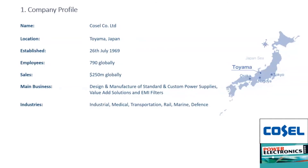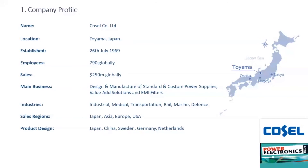Our main business is the design and manufacture of standard and custom power supplies. We also offer value-added solutions and EMI filters — we focus exclusively on power supplies. We have four main offices outside Japan: one in the USA and two in Asia, one in Europe. About 95% of our products come from Japan, we have a factory in China, and recently we acquired a company in Sweden called Powerbox.